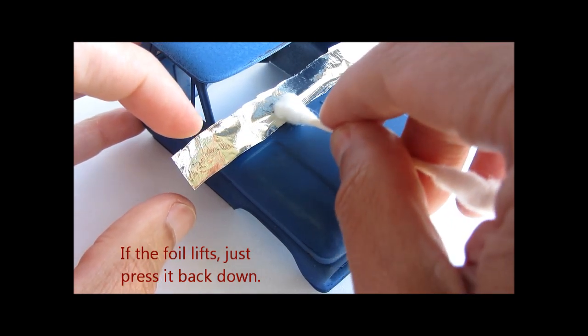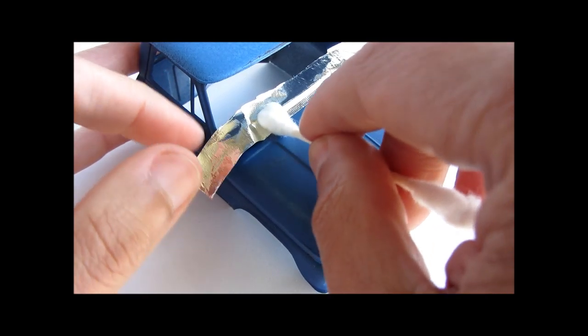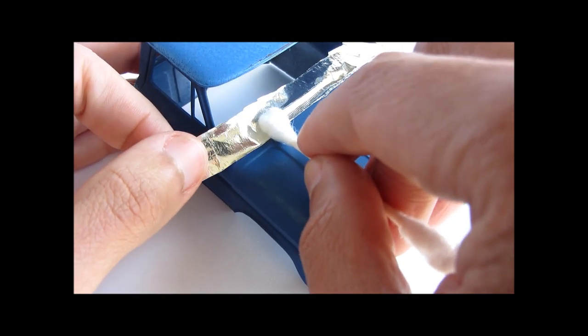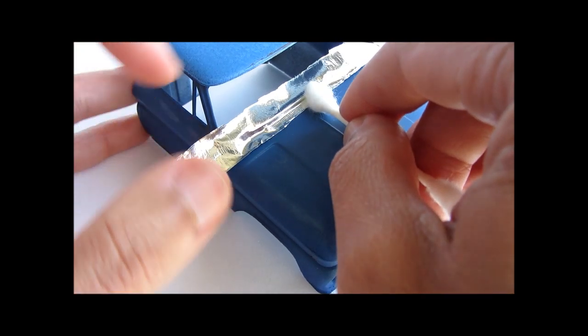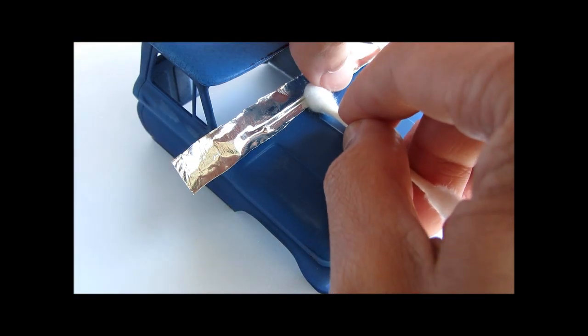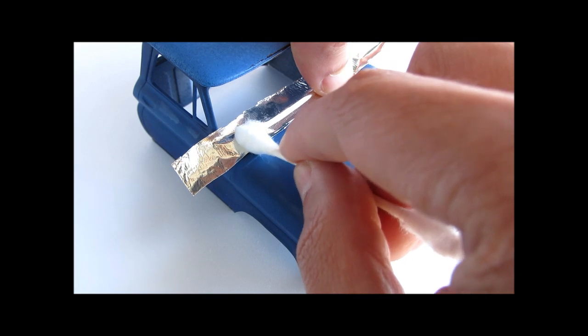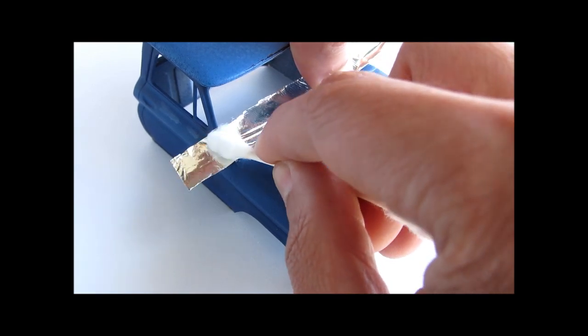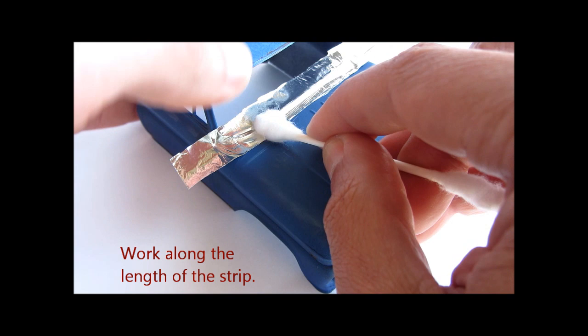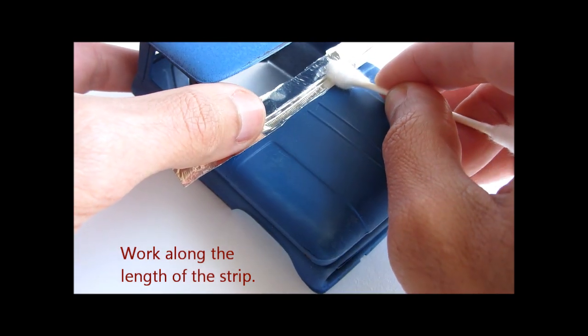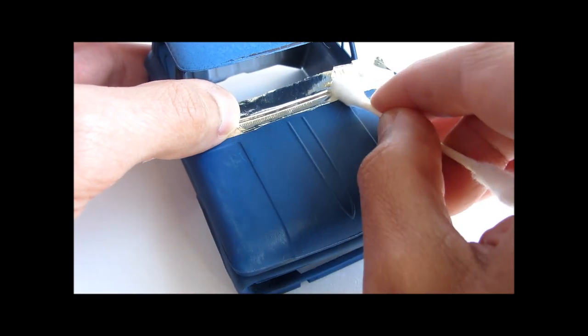Work along the length of the region you're trying to mask. In this case, we're just doing the lower part of the windshield first. We'll do it in four sections. Just keep going along the length of the strip until the foil is securely stuck in place.